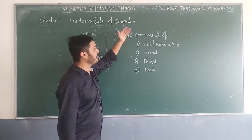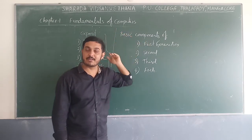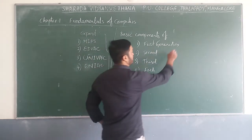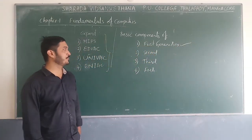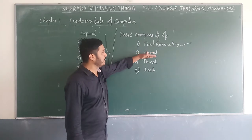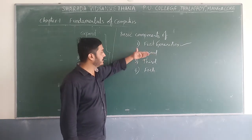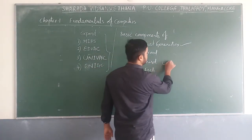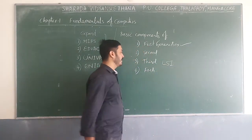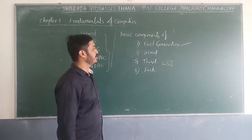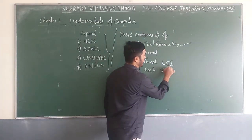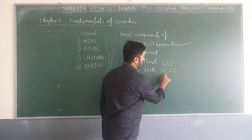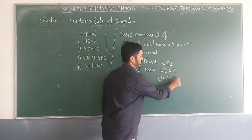The basic components by computer generation are: first generation used vacuum tubes; second generation used transistors; third generation used ICs (Integrated Circuits); fourth generation used LSI — Large Scale Integration; and the fourth/fifth generation used VLSI — Very Large Scale Integration — and ULSI — Ultra Large Scale Integration.